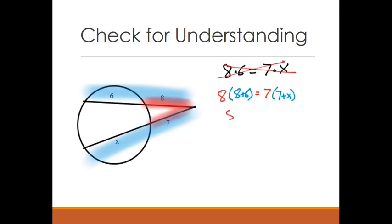Now we're ready to solve. We have 8 times, that's going to become a 14 when I multiply it. And on this side of the equation, I'm actually going to have to distribute and do 49 plus 7X. And then this 8 times 14 right here, that's going to become 112.